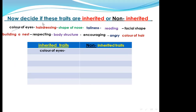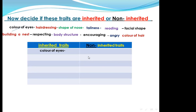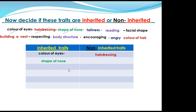Malik — shape of nose: inherited traits. Excellent, well done Malik. What about tallness? Ahmad Wail: inherited. Excellent, inherited traits. I want to listen to Mohammed. What about reading, Mohammed? Reading — non-inherited traits. Excellent, reading is a non-inherited trait.